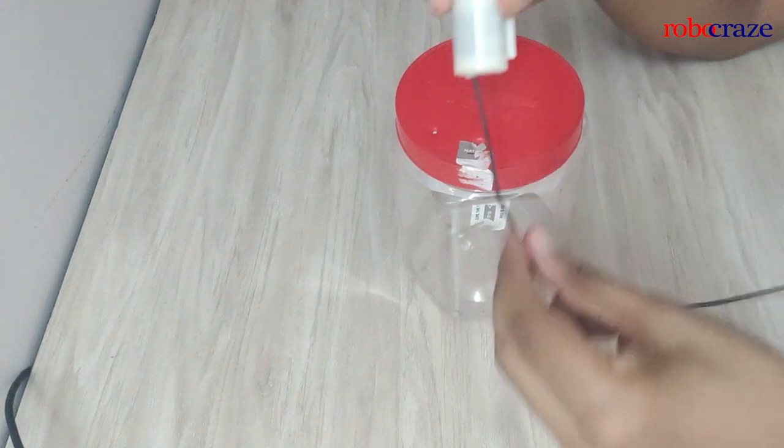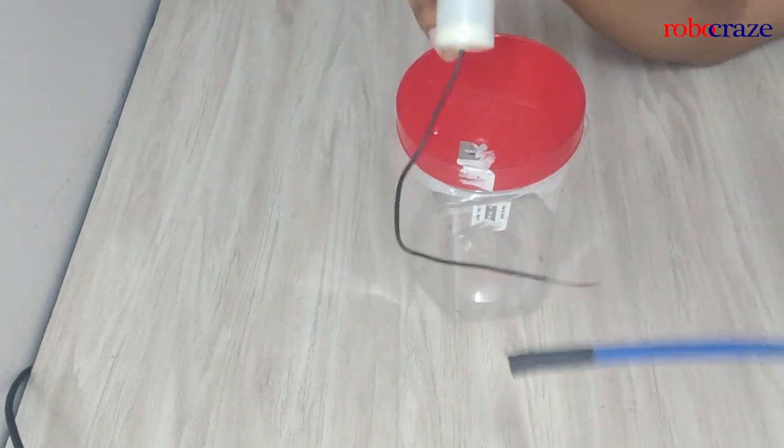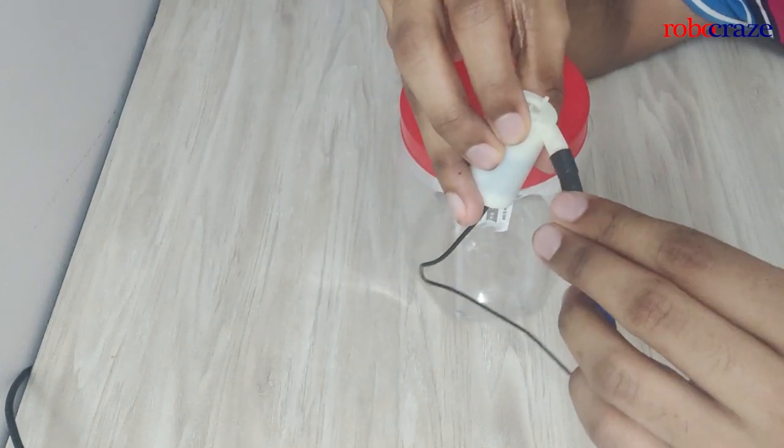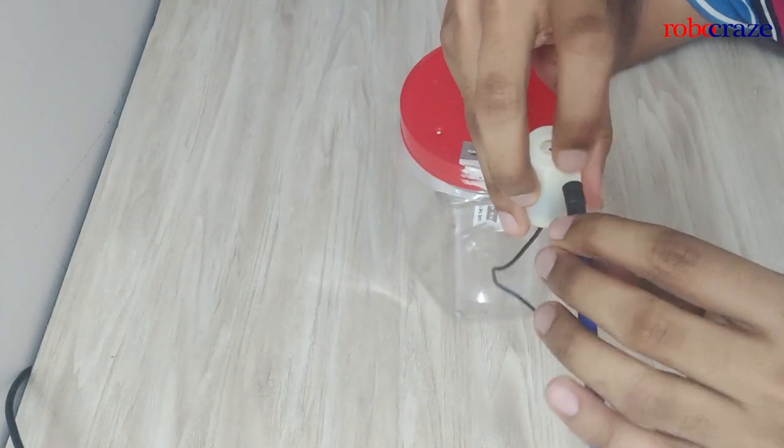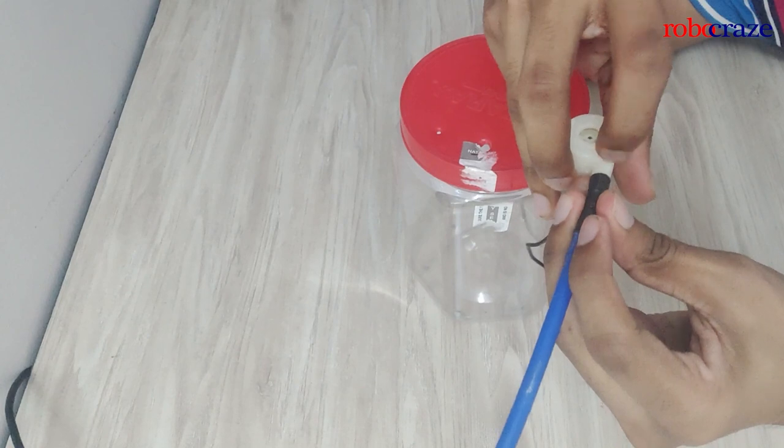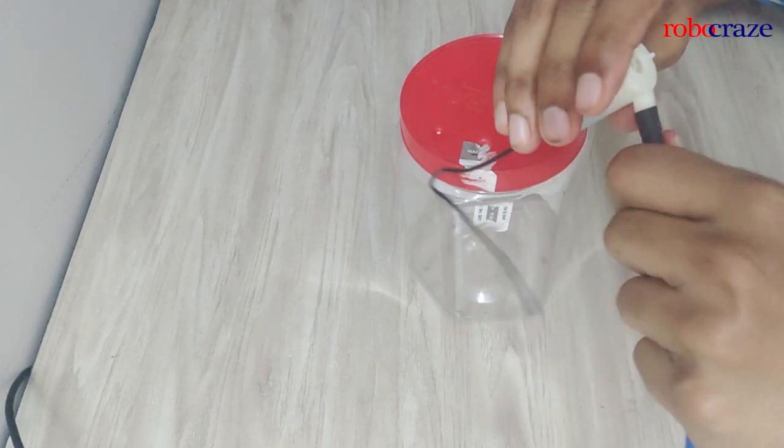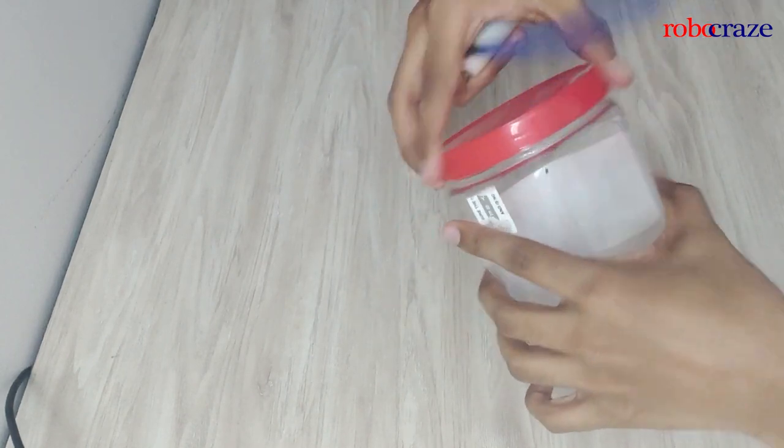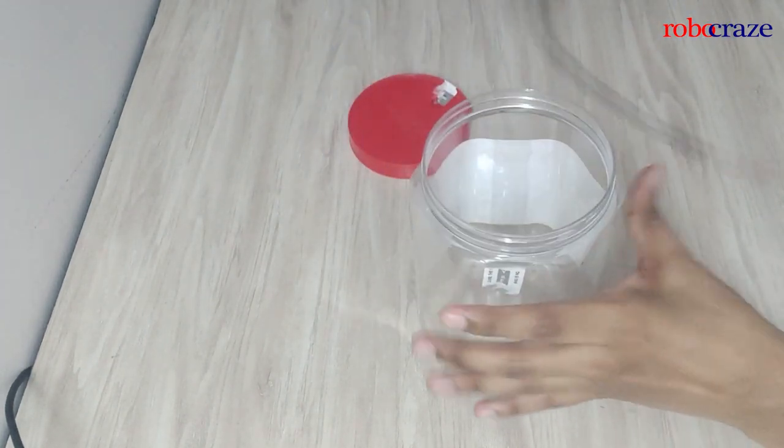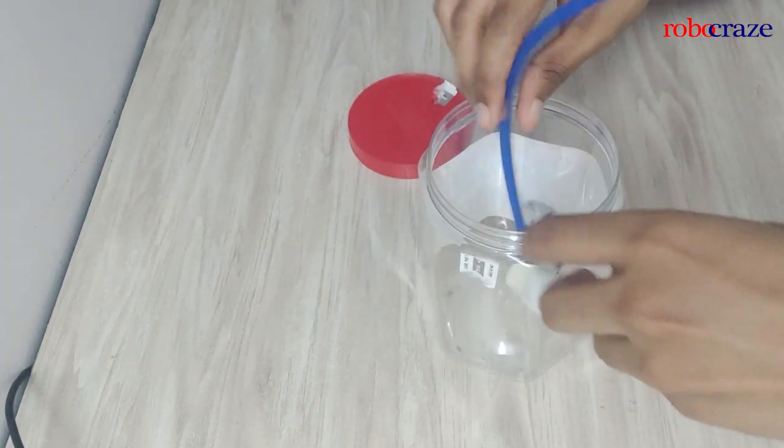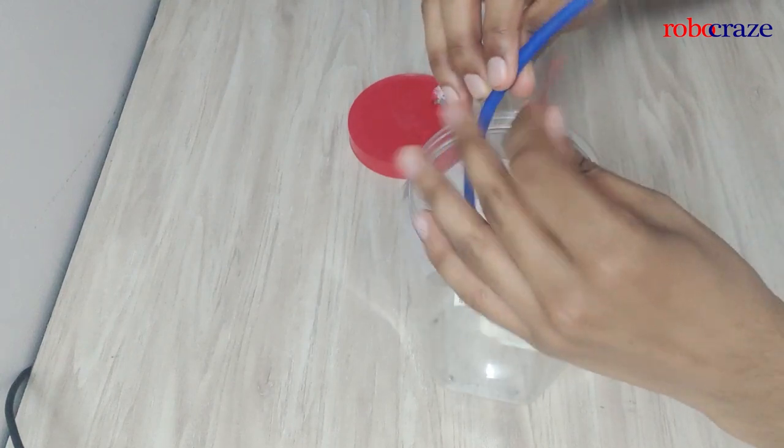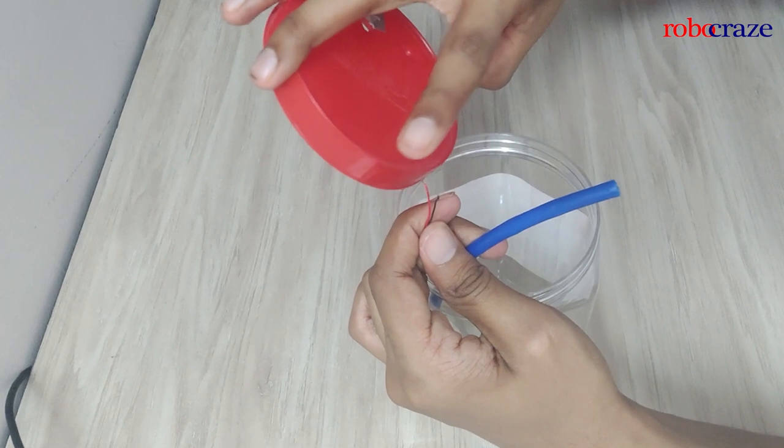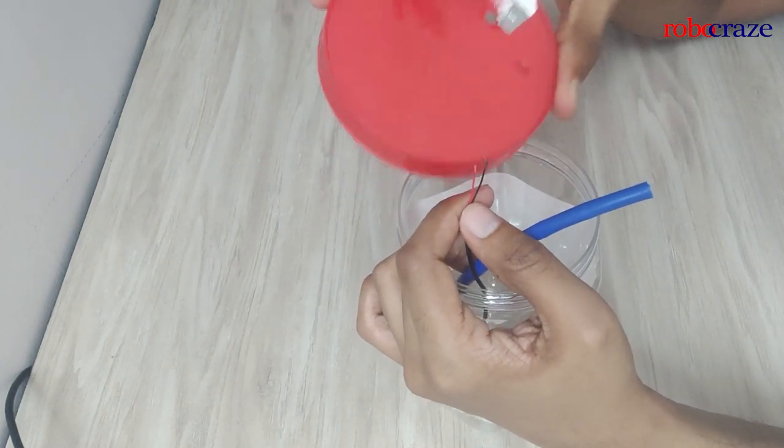Next, we take the DC pump and we take the tubing and attach the tubing to the hole of the DC pump, where the water or any liquid will get pumped out. Make sure it's secure. Open the jar, put the pump inside and route the tubing and the wires through the two holes respectively.